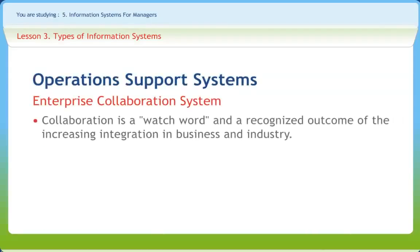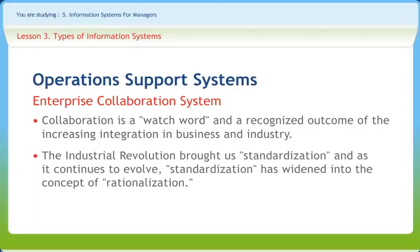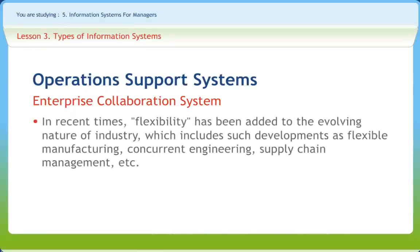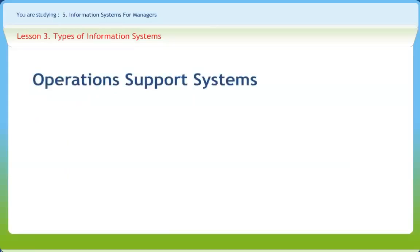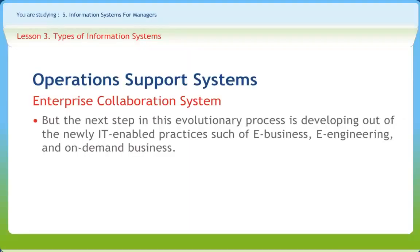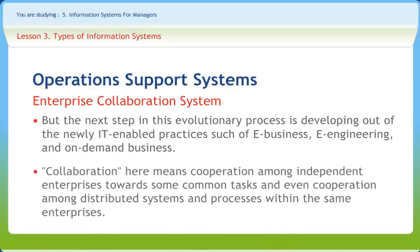Collaboration is a recognized outcome of the increasing integration in business and industry. The industrial revolution promoted standardization, and as it evolved, standardization widened into the concept of rationalization. In recent times, flexibility has been added, which includes developments such as flexible manufacturing, concurrent engineering, and supply chain management. The next step in this evolutionary process is developing out of IT-enabled practices such as e-business and e-engineering, which bring the concept of collaboration to the next level of industrial evolution. Collaboration here means cooperation among independent enterprises towards common tasks, and even cooperation among distributed systems and processes within the same enterprise.